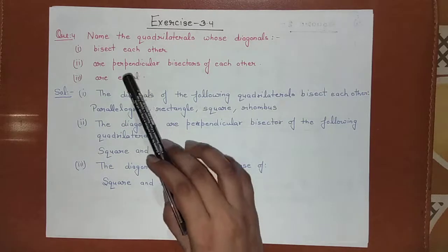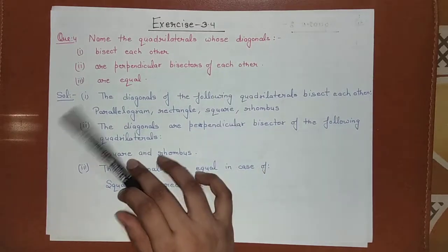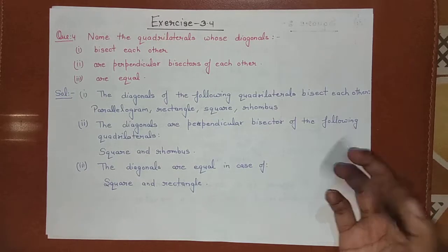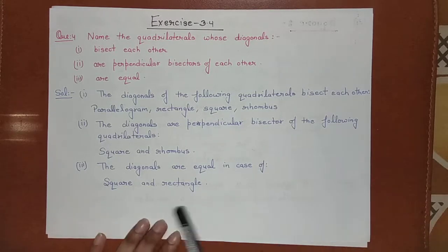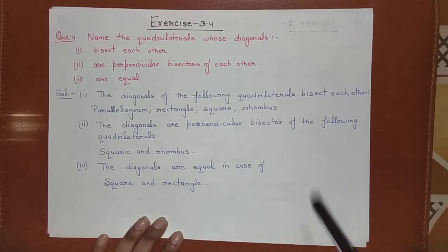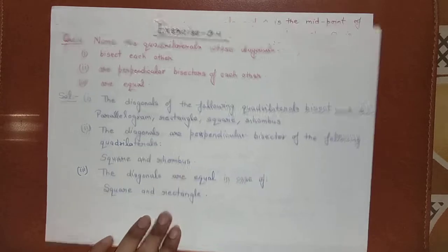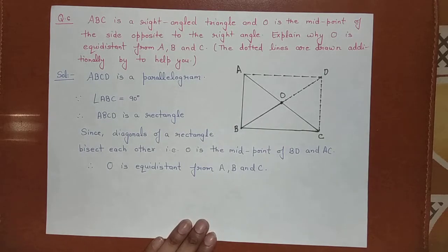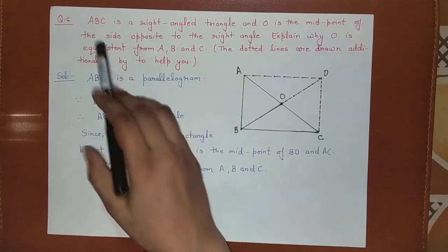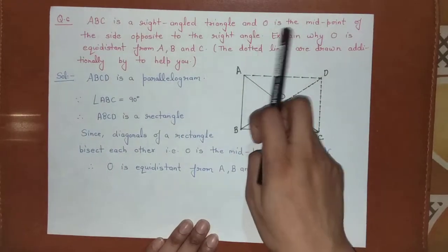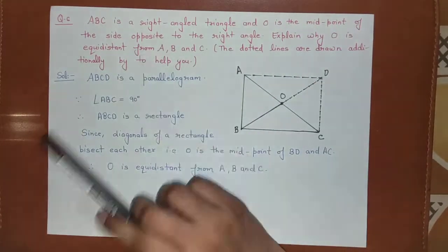Name the quadrilaterals whose diagonals are equal. We studied 2 cases: square and rectangle. Both diagonals are equal in these quadrilaterals.